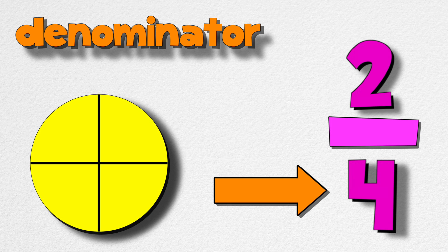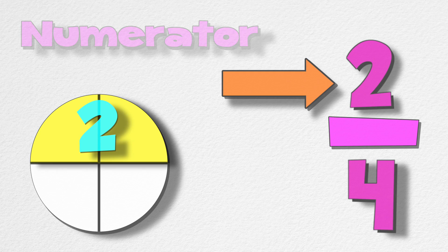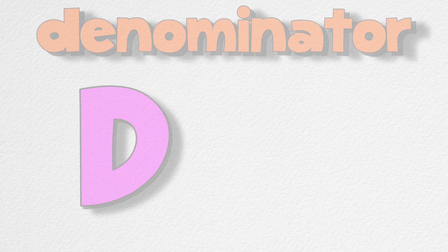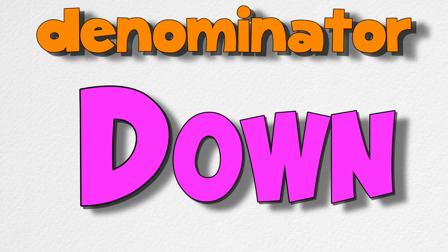Denominators are the bottom number of a fraction. They tell you how many parts make up one whole. The top number of a fraction is called the numerator, and it tells you how many parts of the fraction you have. Sometimes I remind myself that denominator starts with the letter D, and D is for down. Denominators are always down on the bottom.